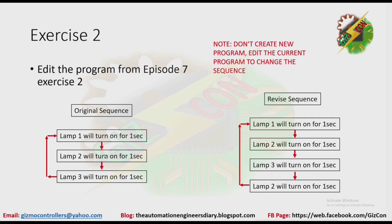Exercise 2. Edit a program from episode 7, exercise 2. The original sequence is: lamp 1 will turn on for 1 second, then lamp 2 will turn on for 1 second, then lamp 3 will turn on for 1 second, then the cycle will just repeat. But for the revised sequence, lamp 1 turns on for 1 second, lamp 2 for 1 second, lamp 3 for 1 second — but instead of going back directly, lamp 2 must turn on first before it goes back. Please note: don't create a new program; you need to edit the current program to change the sequence.